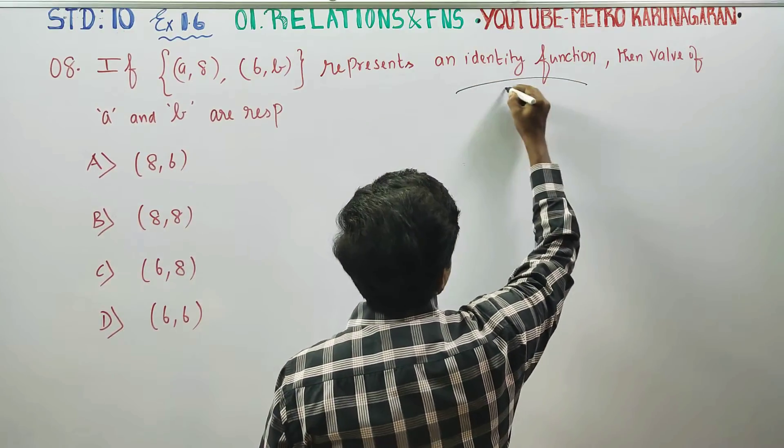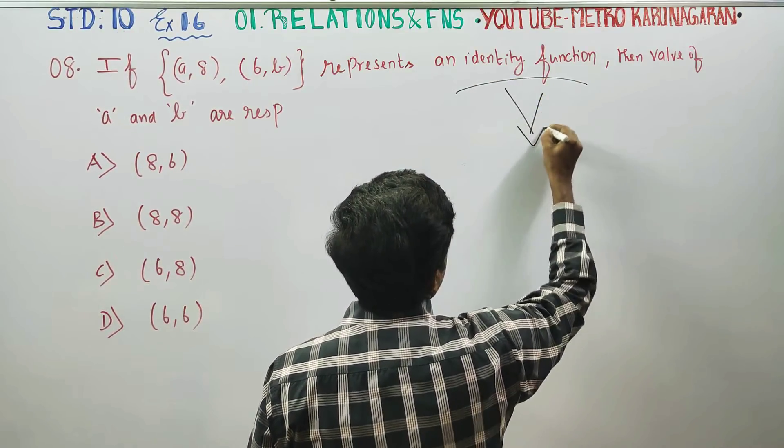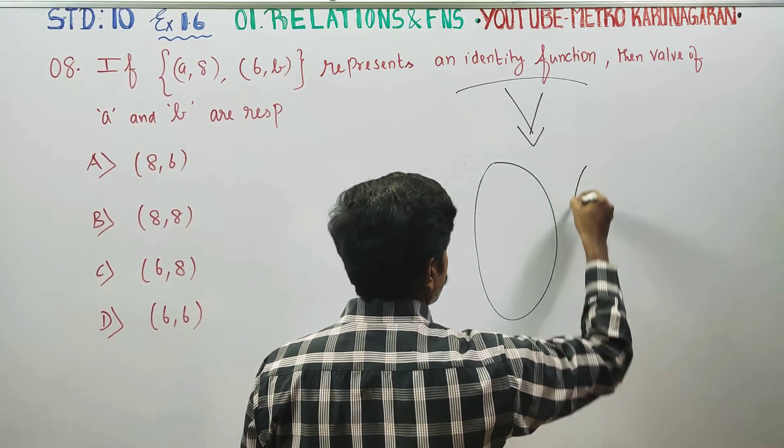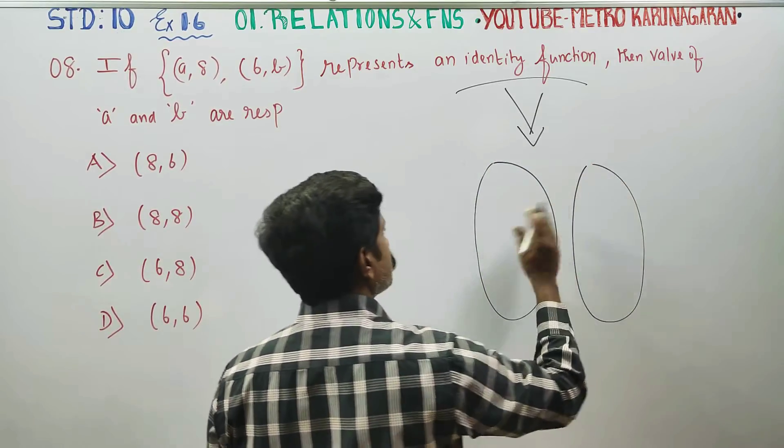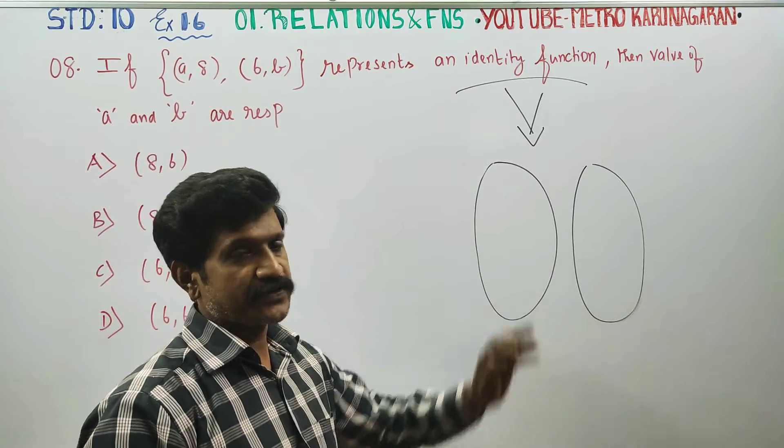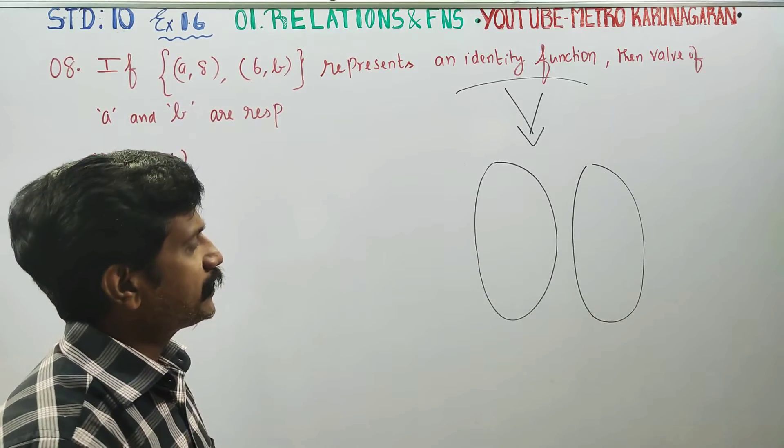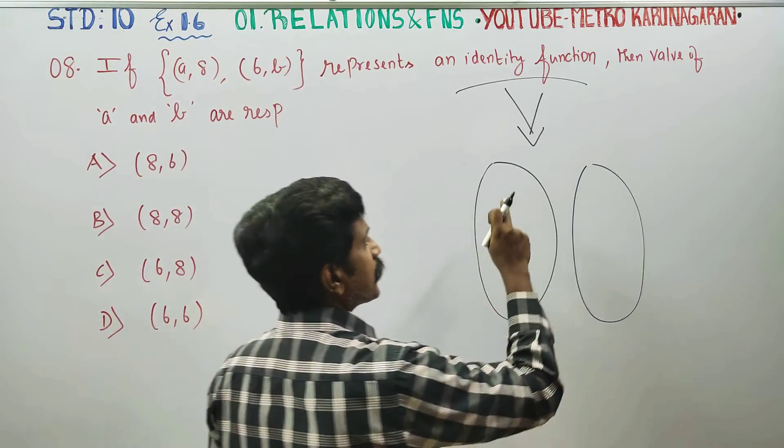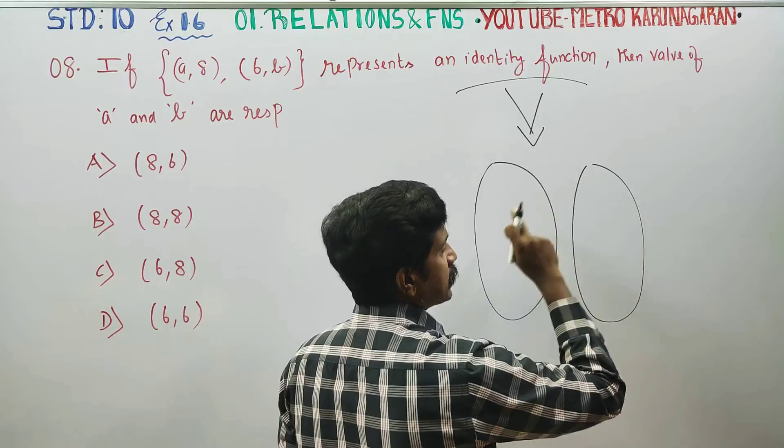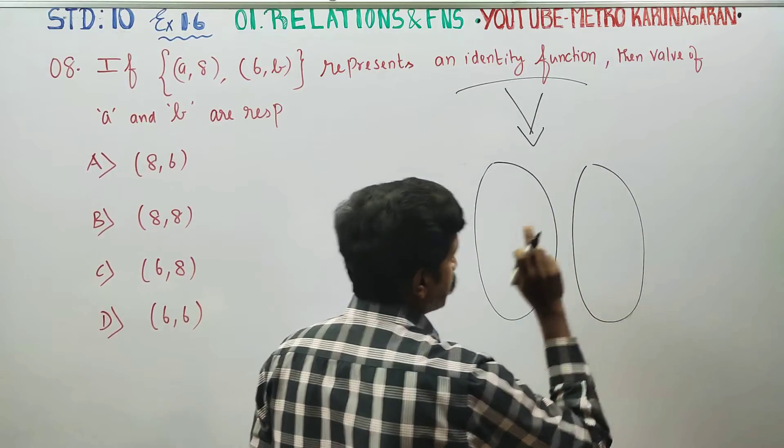Identity function - the beauty is that in your domain, co-domain, both should be same. In identity function, whichever element starts, that will be the image. Whichever element starts, that will be the image.